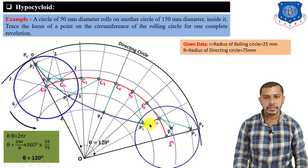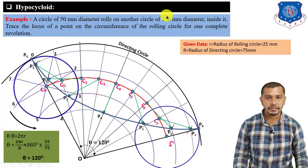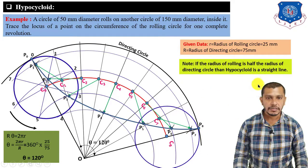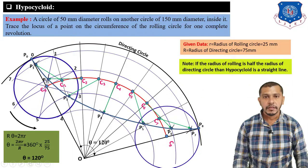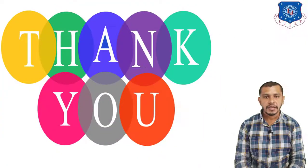In hypocycloid, if the radius of the rolling circle is half the radius of the directing circle, then the hypocycloid generated will be a straight line. This is it for today — here we are closing the chapter of engineering curves. Thank you for watching. In our next lecture we will come with new topics; till then, take care.